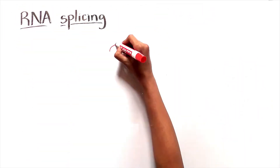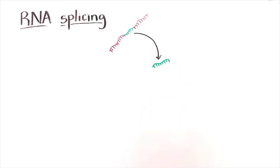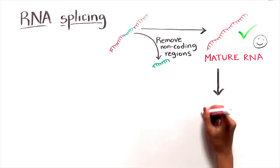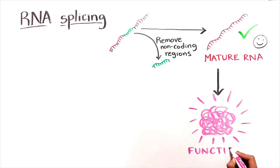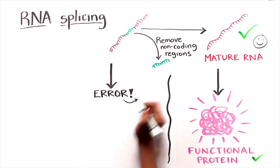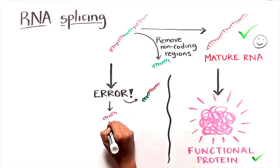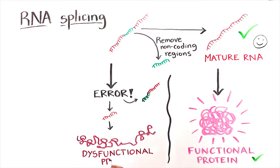RNA splicing removes non-coding regions of an RNA sequence to produce a mature RNA molecule, which in turn provides the instructions for the production of proteins. Errors in RNA splicing can lead to RNA molecules that are missing essential segments of sequence, which can produce dysfunctional proteins.